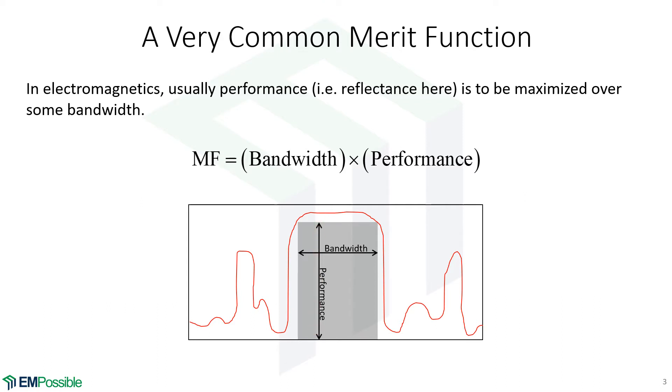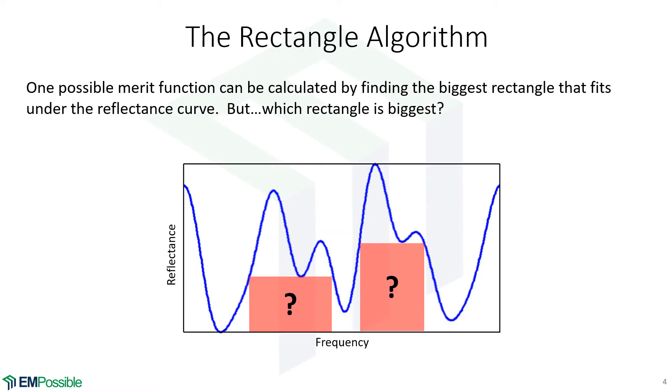It's the reflectance. We want that to be as high as possible. So our problem is this. How do we figure out what is the biggest rectangle that we could fit under that curve? That's the rectangle algorithm. Probably lots of ways to do this, but here's the approach we've taken that's worked well for us.